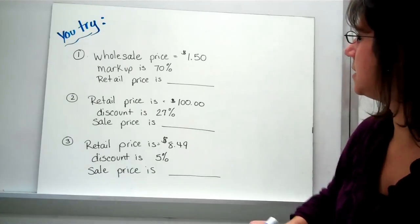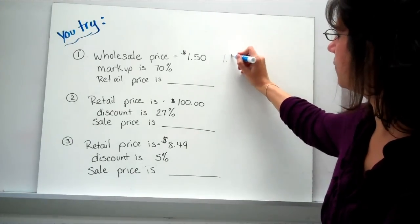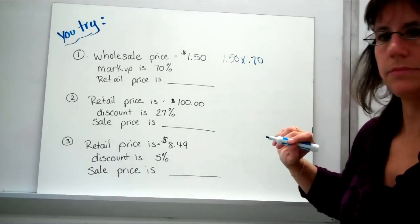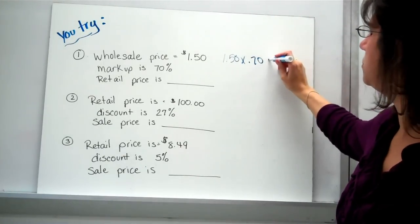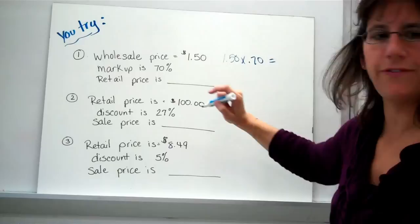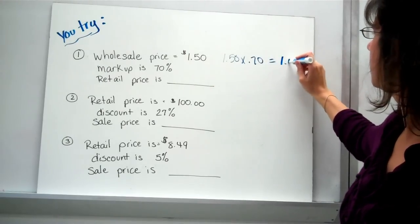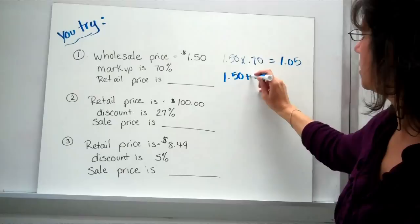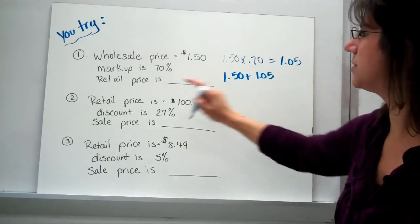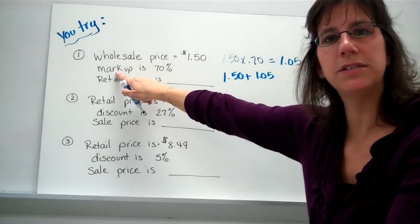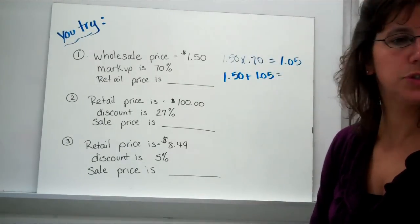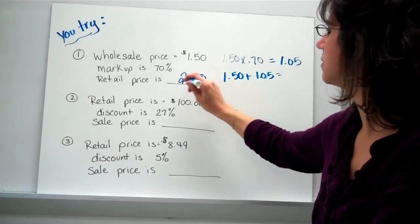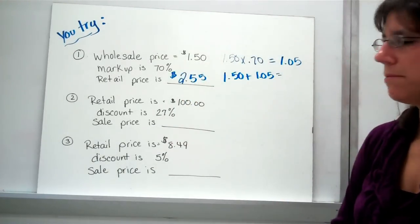Alright, let's see. You should have done $1.50 times the decimal. And that means you are, let's see, it's a profit of $1.05. So you add $1.50 plus the $1.05 because notice it says markup. Price is going up. So that gives you a total of $2.55.